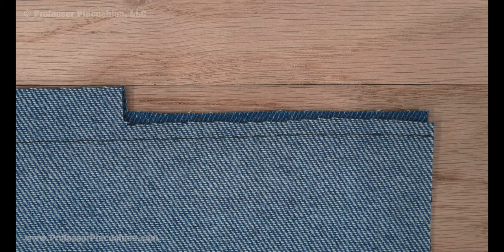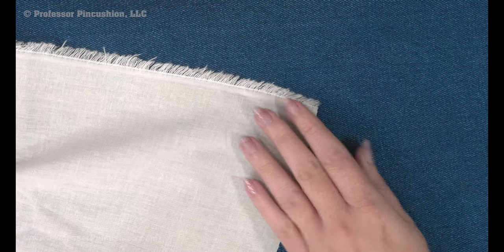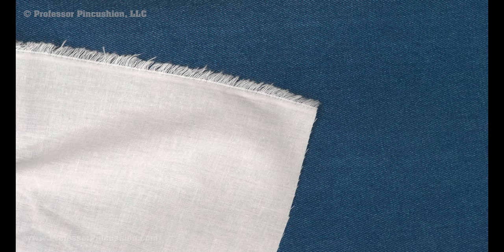Things can get bulky really fast, so for closed seams, you'll want to grade them, which means seam allowances are trimmed at different lengths. If you need to use facings or lining, choose something lightweight to make sure the garment doesn't get too bulky.